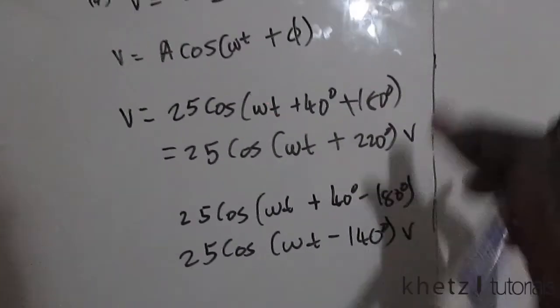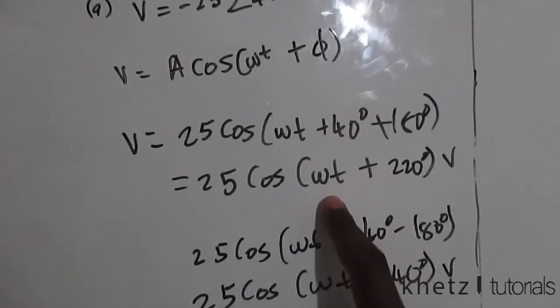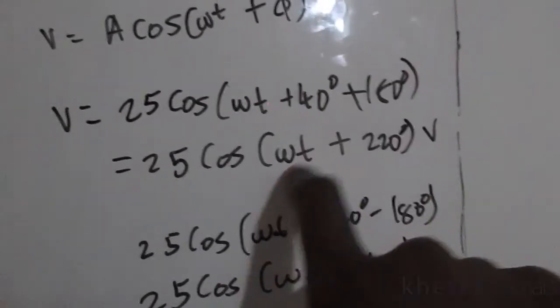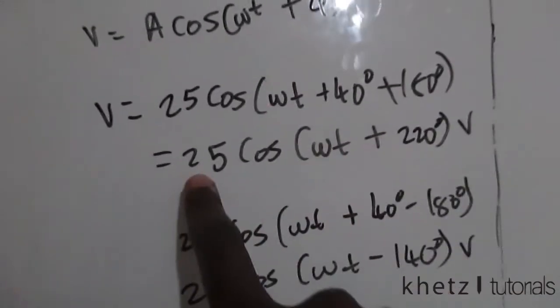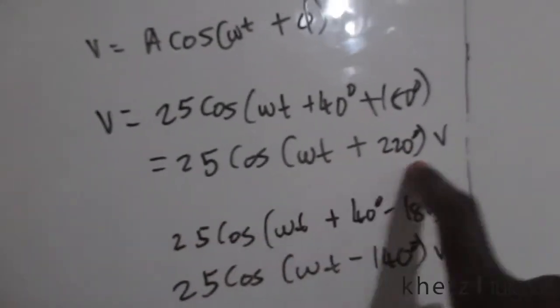These two sinusoids are equivalent, and you can prove this by assuming t to be zero. Now taking t to be zero will make this term zero, so you'll only have 25cos(220°), so punch that into your calculator.